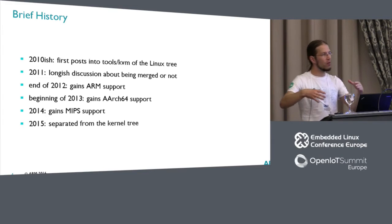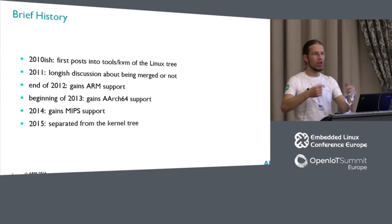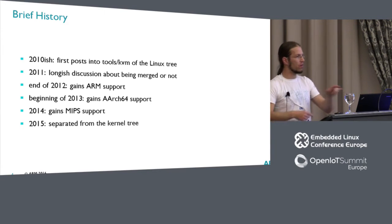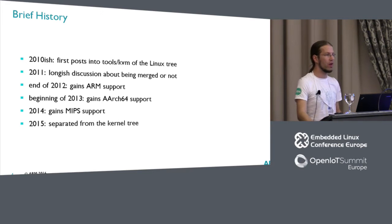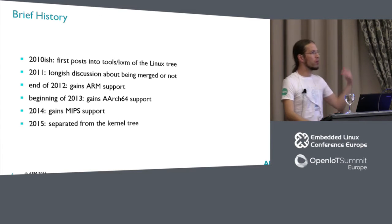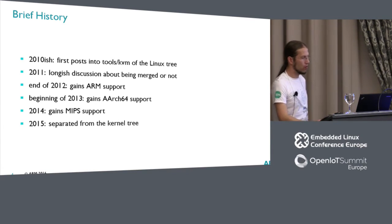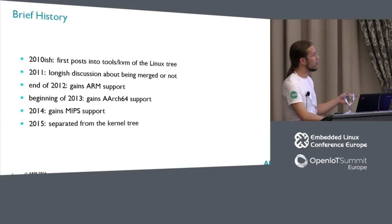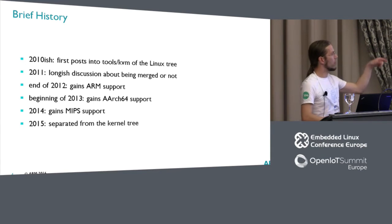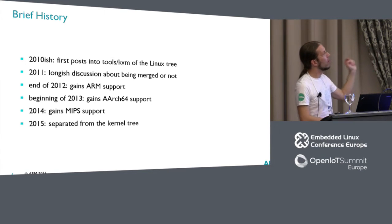The idea was that if you co-develop features both in user land and kernel land at the same time and commit them, you make sure that the ABI is right so the interfaces are correct. And you also give people some idea how to implement this. Personally, I don't like the idea so much — I will come back to this.